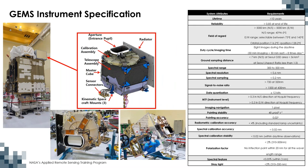This slide shows the GEMS instrument specification. The left figure shows the GEMS flight model drawing and pictures of the calibration assembly with aperture, and the radiator side views. The GEMS instrument was designed to operate for more than 10 years, producing 8 images per day. GEMS measures radiance and irradiance for the spectral range of 300 to 500 nanometers at a spectral resolution of 0.6 nanometers with 3× oversampling, built under requirements for SNR, polarization, and stray light.